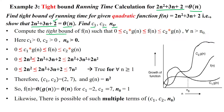For finding the tight bound or average bound, we have the criteria: 0 ≤ c1·g(n) ≤ f(n) ≤ c2·g(n) for all input size n greater than initial input size n0. From n0 onwards, it should hold that c1·g(n) ≤ f(n) ≤ c2·g(n).